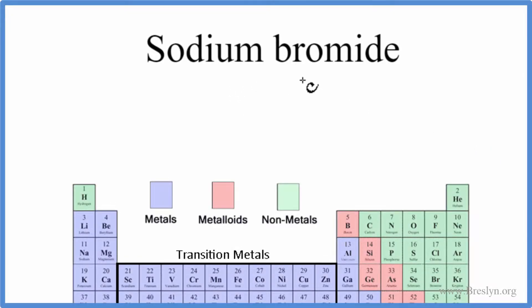To write the formula for sodium bromide, we look on the periodic table. Sodium, that's Na, is a metal, and the bromide ion, that's the bromine, is a nonmetal.